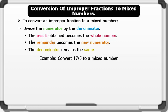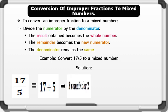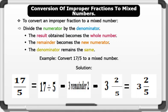Convert 17 over 5 to a mixed number. Solution: 17 over 5 — we divide the numerator by the denominator, that is 17 divided by 5. This gives us 3 remainder 2. The result, which is 3, becomes the whole number. The remainder, which is 2, becomes the new numerator. And the denominator, which is 5, remains the same. This equals 3 whole number 2 over 5.